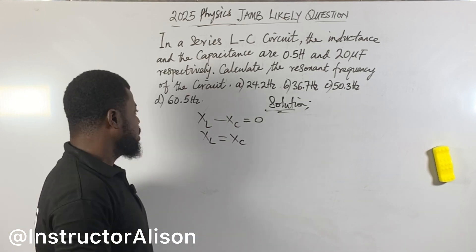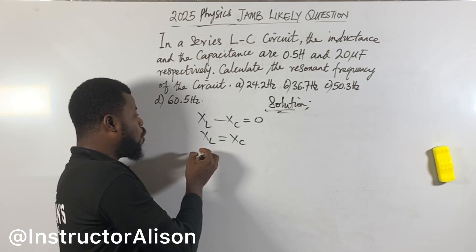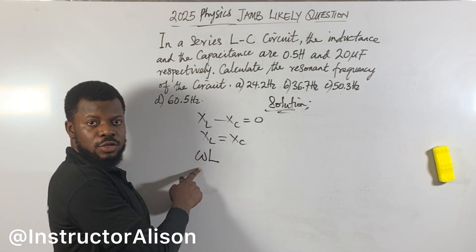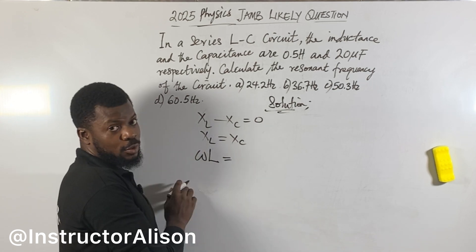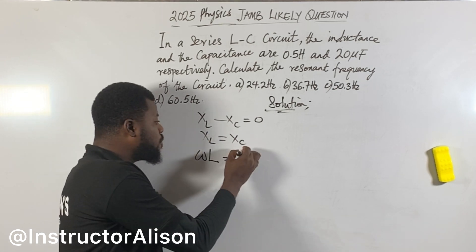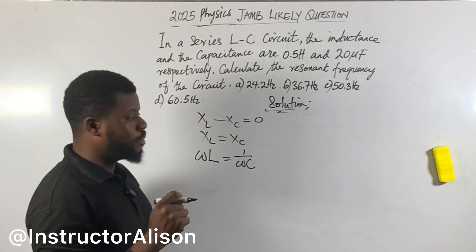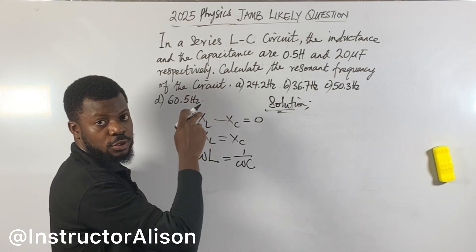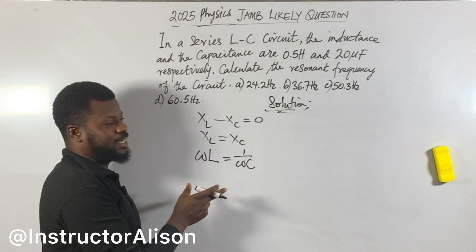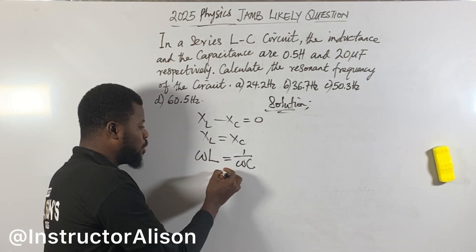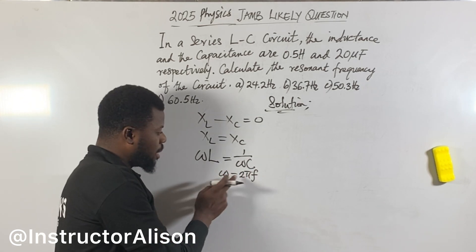Now you can work with this. The formula for inductive reactance is omega L. Omega is angular frequency or angular velocity. The formula for capacitive reactance is 1 over omega C — not omega C directly. That would be wrong. It's 1 over omega C. Remember that omega equals 2 pi f, from circular motion in physics. So anywhere you see omega, replace it with 2 pi f.